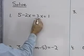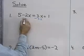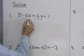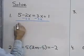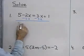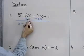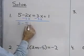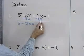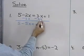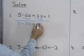I'll begin by adding negative 3x to both sides of the equation. When I do so, I end up with 5 minus 2x plus negative 3x, which is negative 5x, equal to 3x plus negative 3x plus 1, which is 1.